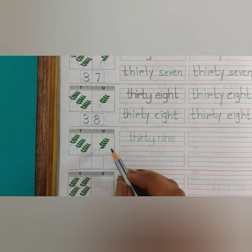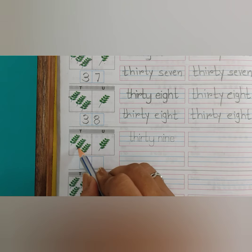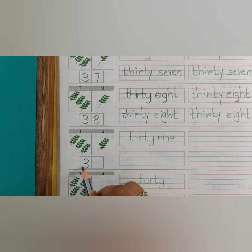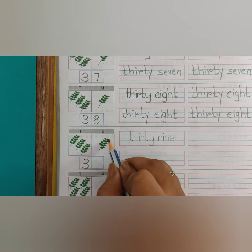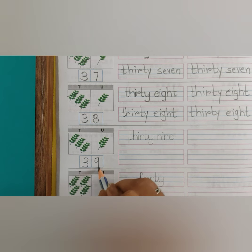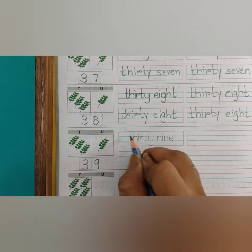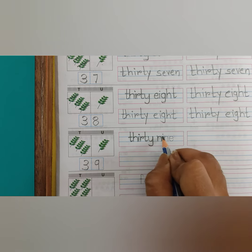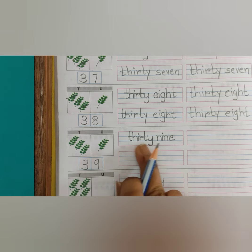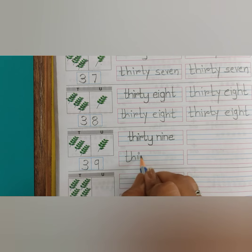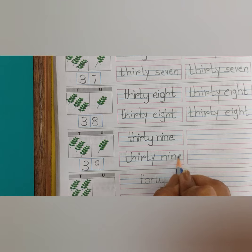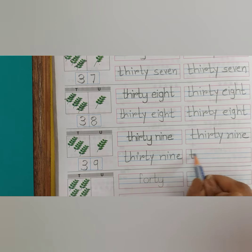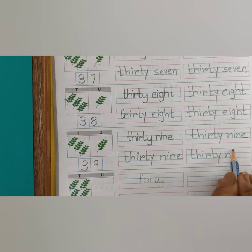अब यहाँ leaves हम काउंट करेंगे. यहाँ पे 10s का एक ग्रूप है, और यह भी 10s का एक ग्रूप है. तो 10s के कितने ग्रूप है? 1, 2, 3. तो पहले हम 10s में 3 लिखेंगे. यूनिट्स में हम काउंट करेंगे: 1, 2, 3, 4, 5, 6, 7, 8, 9. यूनिट्स में हम 9 लिखेंगे. 3, 9 — 39. T-H-I-R-T-Y-N-I-N-E.